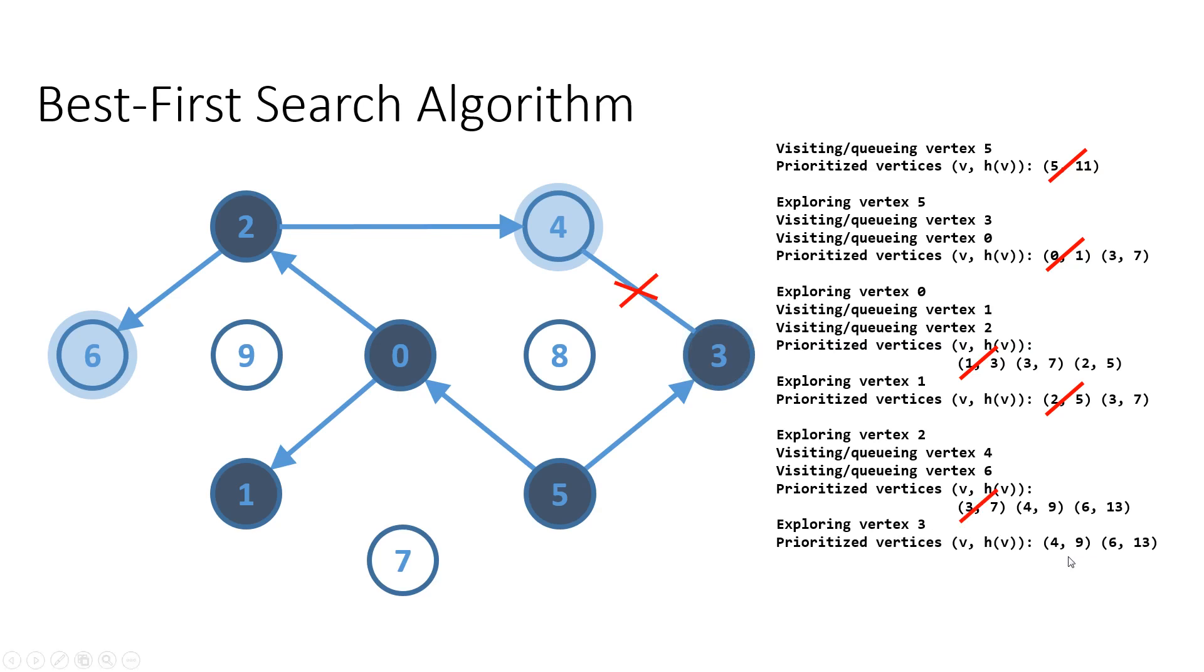Now that we have explored vertex three, we can also see that there will be no connection, no relation to vertex four.